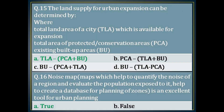The fifteenth question: the land supply for urban expansion can be determined by the formula — option A — that is: total land area of a city, minus protected conservation areas, plus built-up areas. The sixteenth question: noise maps, which are maps that help to quantify the noise of a region and evaluate the population exposed to it, help to create a database for planning of zones. Zones is an excellent tool for urban planning. This is true, so the answer is option A.